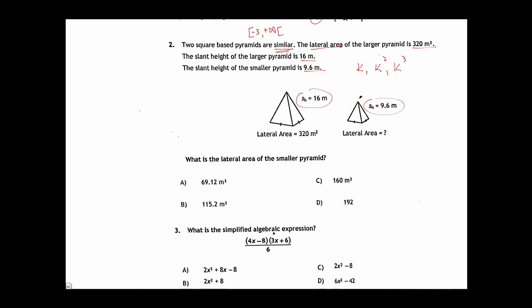Comparing the two slant heights will give us k. Big divided by small means I do 16 divided by 9.6. This gives me 1.67. Since I'm going from lateral area to lateral area, area to area, I need k-squared. To get k-squared, I take my k, which is 1.67, and I square it. 1.67 squared is approximately 2.79.